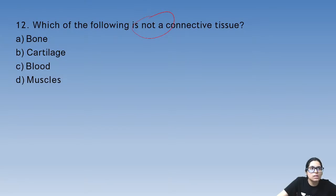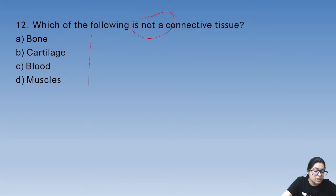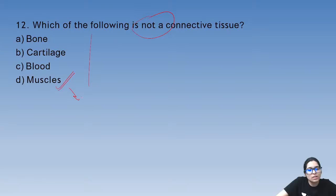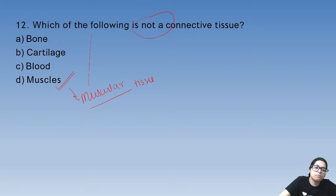Question 12: which of the following is not a connective tissue? Muscle is not a connective tissue — because muscle comes under muscular tissue. Bone, cartilage, and blood are all connective tissues.